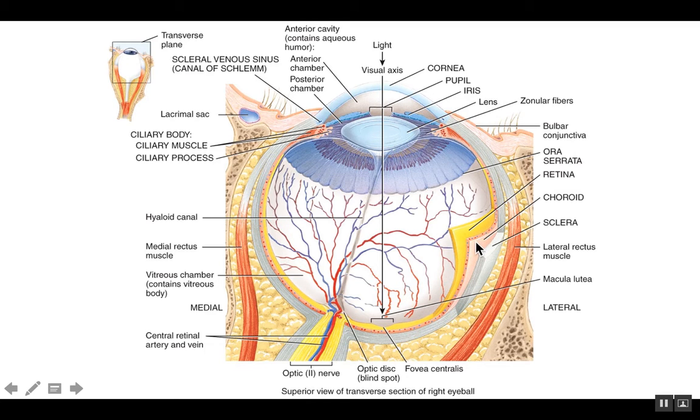If we continue from the choroid towards the anterior part of the eye, it transitions into the ciliary body. And recall the ciliary body has two primary functions. One is the ciliary muscle controls the shape of the lens, specifically during near vision.